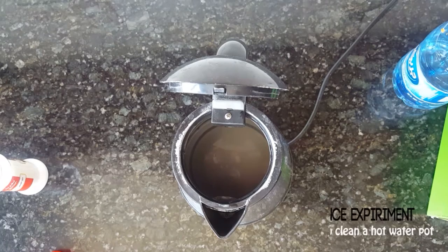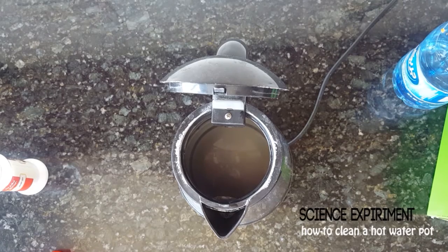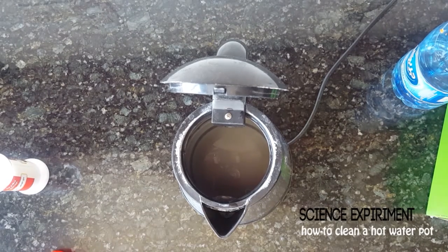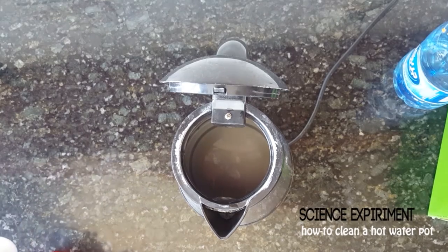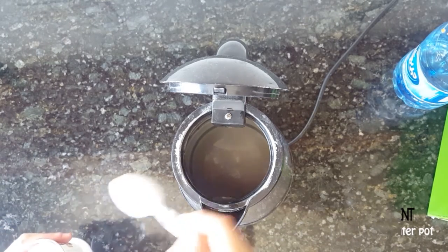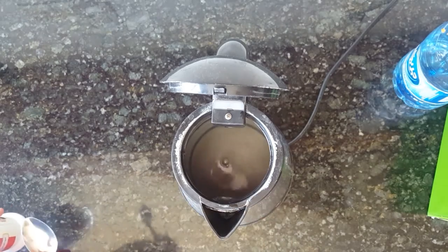What's up guys, it's Sienos here. Today I'll be showing you a science experiment. In this science experiment we're going to show you how to clean a hot water pot. So first thing you need to drop one and a half teaspoons of sulfuric acid inside.